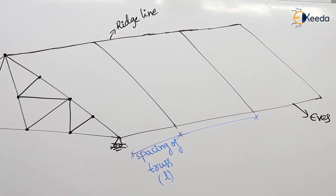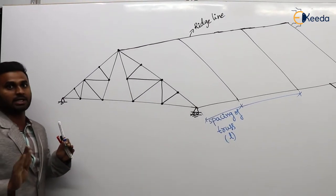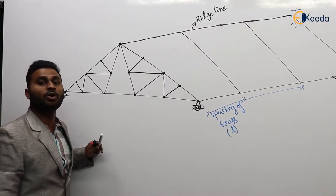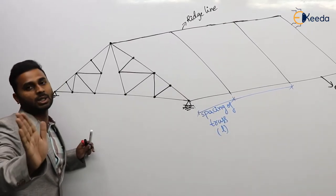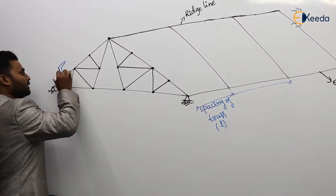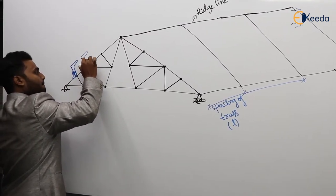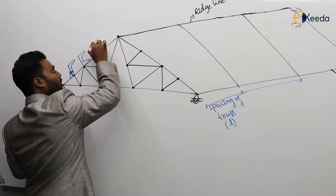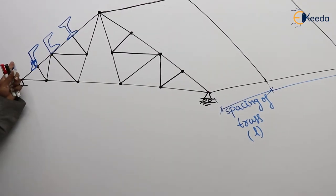Exactly at the node or joint, we are going to place beams which are known as Purlins. Purlins are the beams placed between the roof truss and roof covering material. Mainly angle and channel sections are used as purlins. I-section is not recommended as purlins because it is subjected to less loads compared to a normal beam. The cross-sections used are angle and channel.